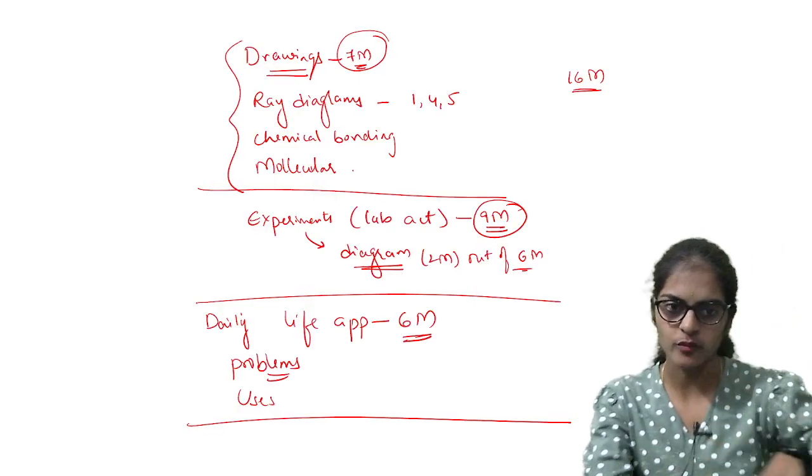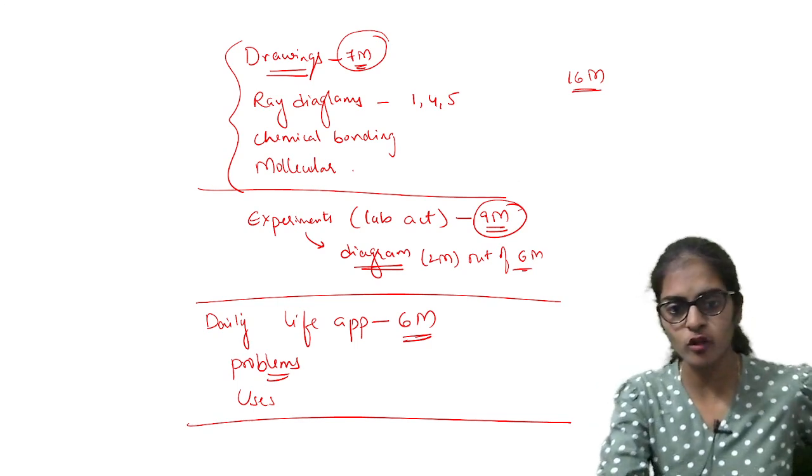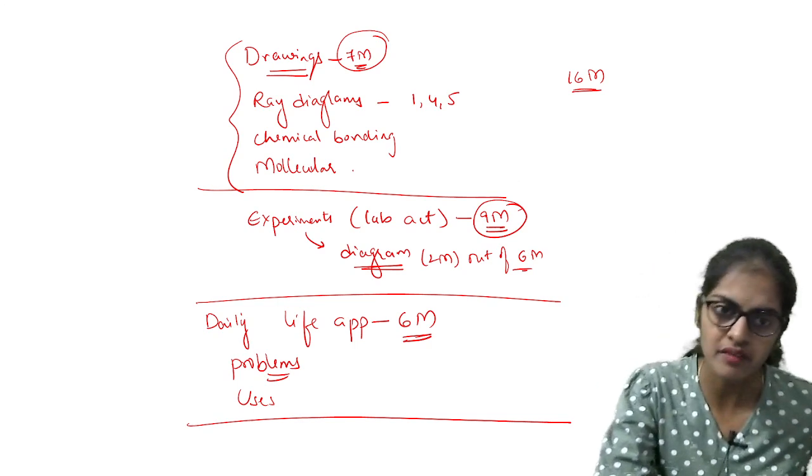So 18 there plus 9, 27. And again one more 7 marks, 34 plus 6, 40 marks. Understood? How is the paper going to be?